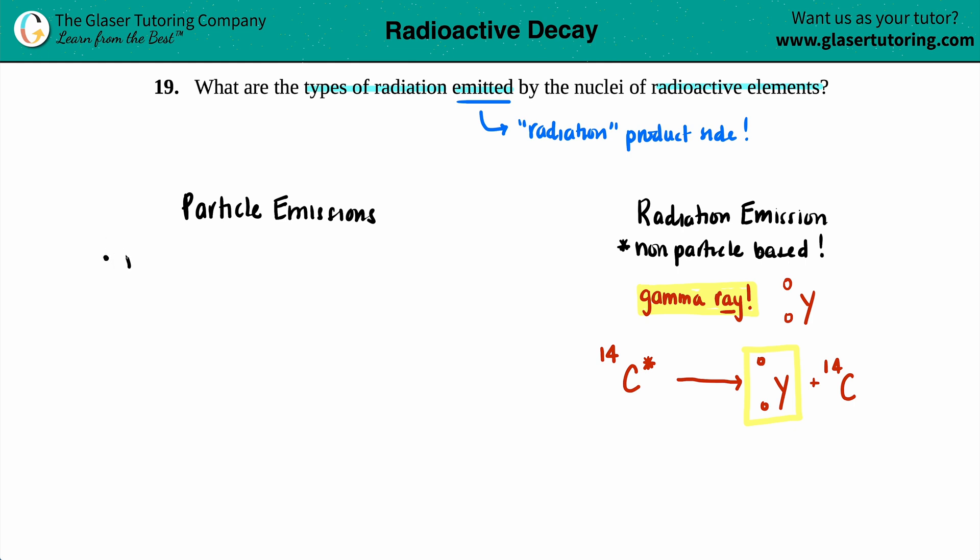We could do alpha emission. That means that when you have some type of radioactive element, it will emit or release into an alpha particle. And an alpha particle is secretly a helium. It's a helium that has a four atomic mass on the top and two atomic number on the bottom. An alpha particle is always going to be a helium.